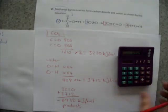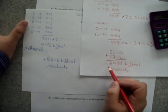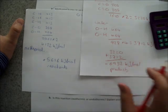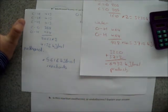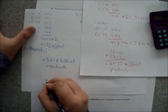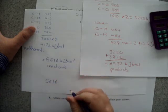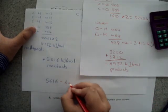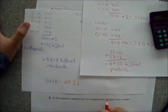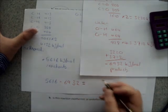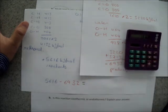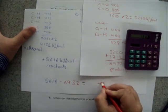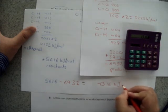So, here we have our minus 6932 kilojoules released of energy from the products, or when the products formed. And we have our 5616 kilojoules of energy that was added to the reactants to break those bonds in the first place. So, then you simply take your 5616, and then you minus the amount of energy that was released, 6932. And that will give us our overall energy change, 5616 minus 6932, which gives us minus 1316 kilojoules per mole.